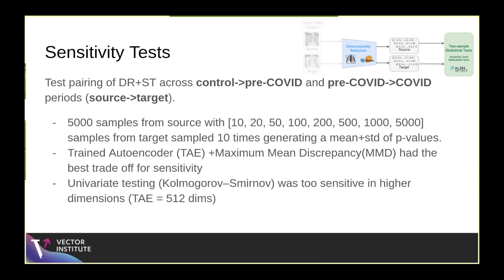The first thing we do is a series of sensitivity tests to evaluate pairings of dimensionality reduction techniques and statistical tests. We use two domains — control and pre-COVID — as source and target, and another set of drift experiments for pre-COVID to COVID, establishing a control and a shift due to COVID. We do 5,000 samples from the source domain and increasing samples from the target, repeated 10 times to generate a mean and standard deviation overlay of p-values. The trained auto-encoders from TorchXRayVision plus maximum mean discrepancy (MMD), a multivariate test, had the best trade-off for sensitivity. Univariate testing like Kolmogorov-Smirnov was particularly sensitive to the high number of dimensions from the trained auto-encoder, which comes in at around 512 dimensions.